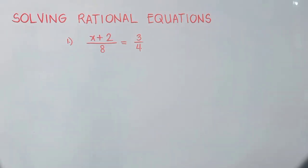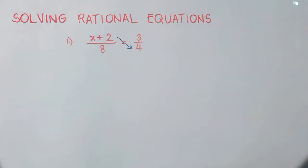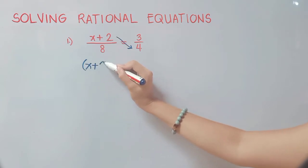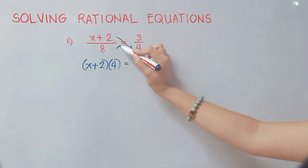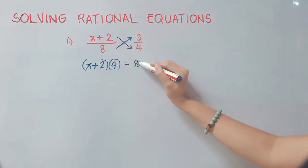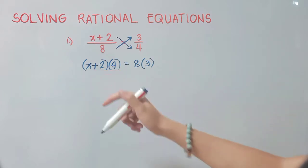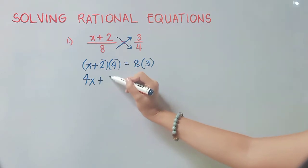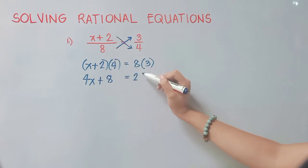Now since both sides are one rational expression, we can cross multiply. We will multiply the numerator of one side by the denominator of the other. So that would be: 4 times x is 4x, and 2 times 4 is 8. And on this side, 8 times 3 is equal to 24.